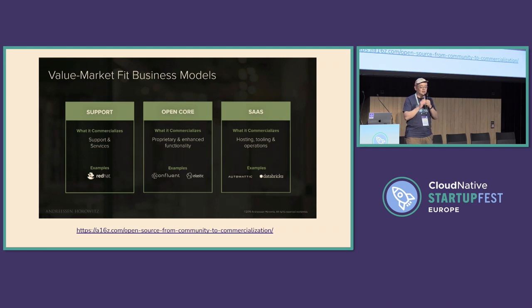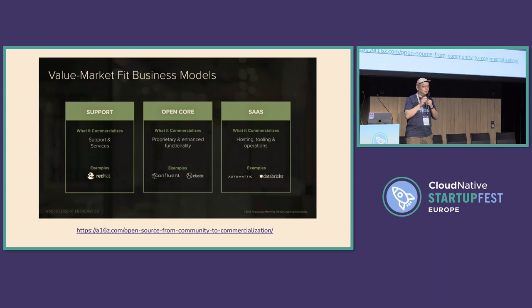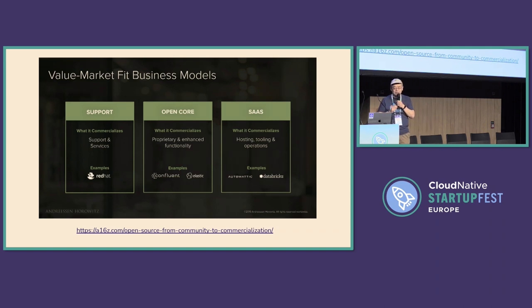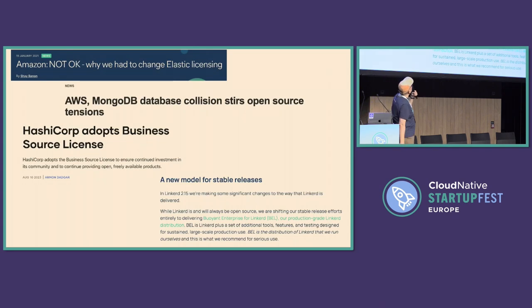There's a long footnote in that article about why open core is not considered kosher — because open core is a mixture of open source and closed-source software distributed together. That gives the community a bad feeling; people don't know which part of the software you're going to close next. The closed-source part that you have to pay for is often on a critical path, so people tend to stay away. For a very long time, support and SaaS were the dominant business models.